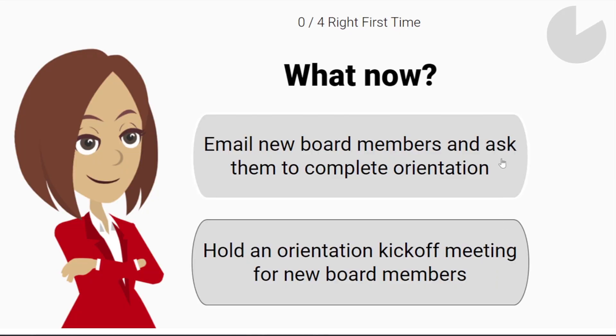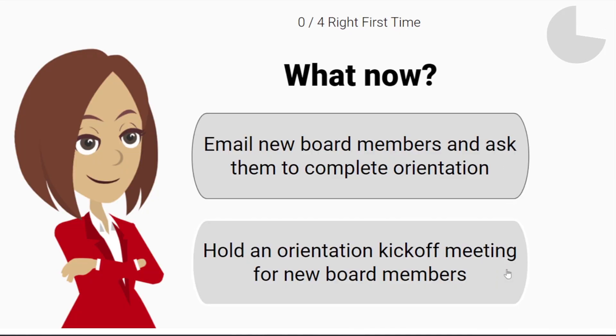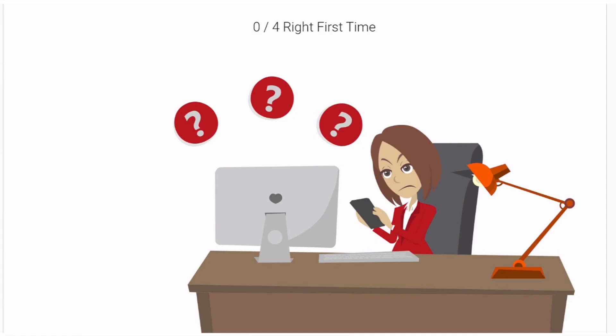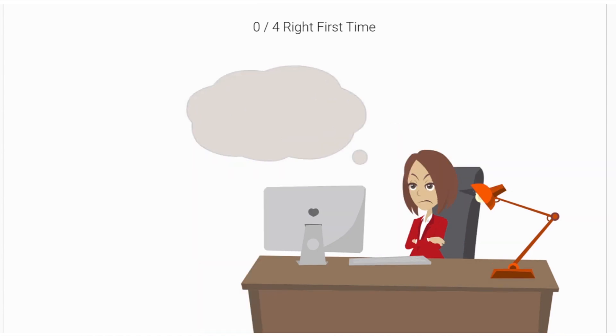Traditional videos don't have any interactivity. With traditional videos, the audience can totally zone out — they're just passive viewers. They don't have to make any decisions beyond pressing pause or play. But now, let's say that training video is interactive. When they come to a decision point, they have to think. They have to choose. And if they choose poorly, they experience a poor consequence, just like they would in real life. It's like choose your own adventure for real situations, and it takes audience engagement to the next level.